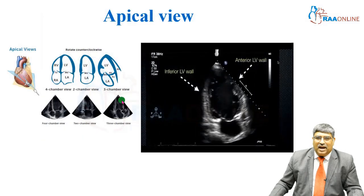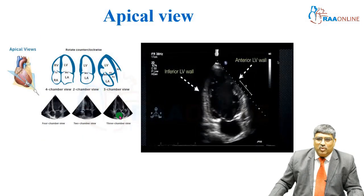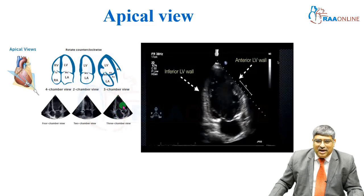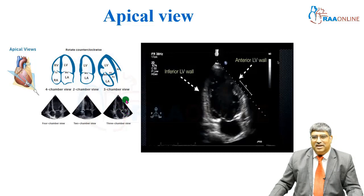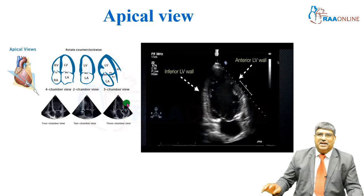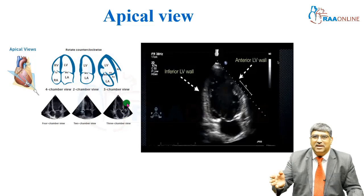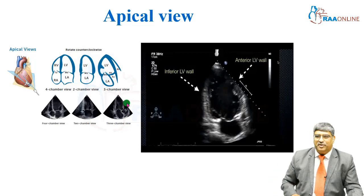Then as you rotate the probe another 90 degrees, you get what is the three-chamber view. Here you have the left atrium, left ventricle, the aortic valve and the aorta, and you can also see the right ventricle. That is the three-chamber view.